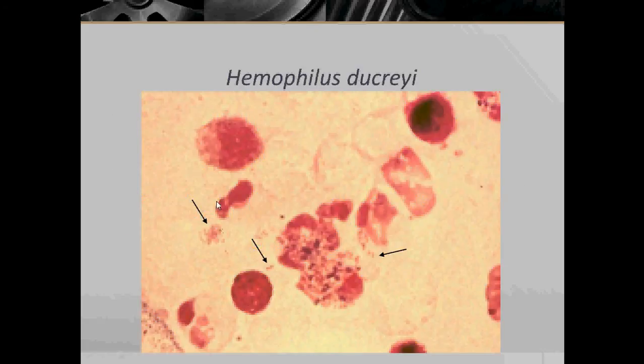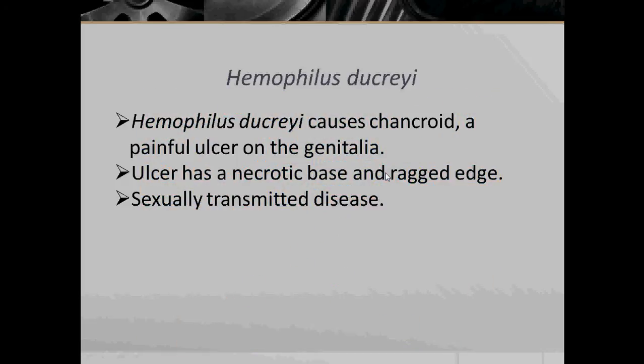Here we see Haemophilus ducreyi under microscopic view. Haemophilus ducreyi causes chancroid, which is a sexually transmitted disease manifested by a painful ulcer on the genitalia. The ulcer has a necrotic base and a ragged edge. Chancroid is curable.